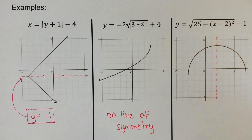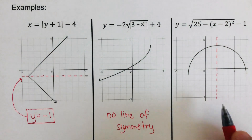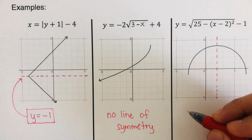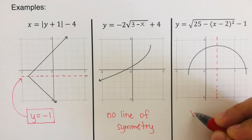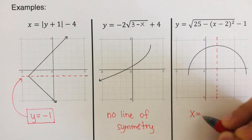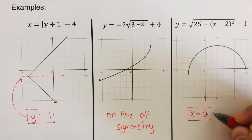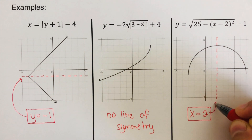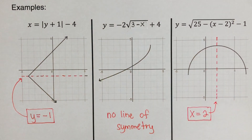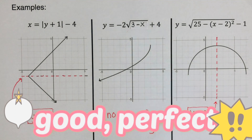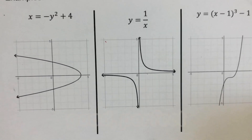In this case, the equation for our line of symmetry would be x is equal to two. That is the equation for the line of symmetry. Did you get the same answers? Good, perfect. Now let's move on to the next one.